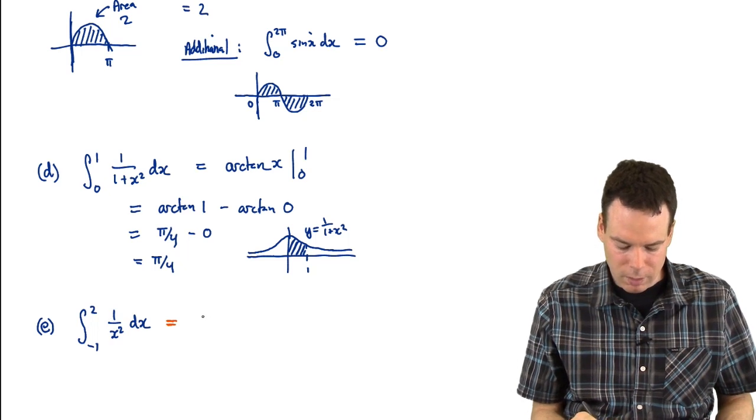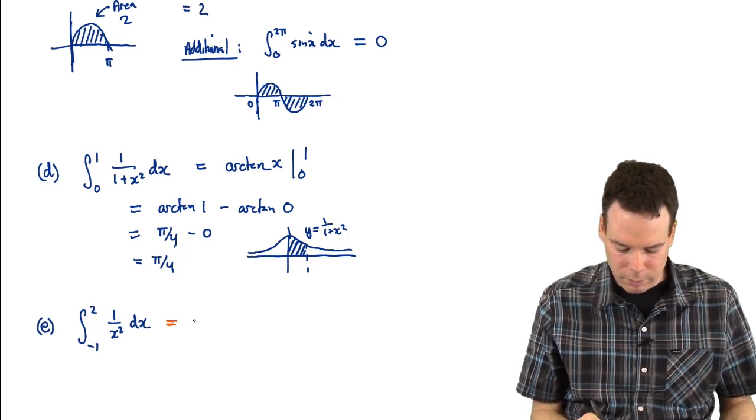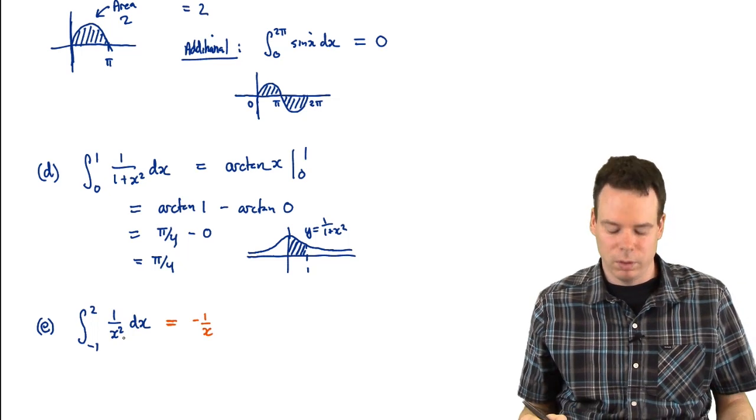So the anti-derivative of 1 over x squared, that's negative 1 over x, that's the function whose derivative is 1 over x squared.